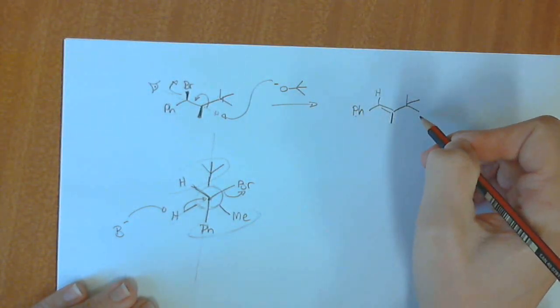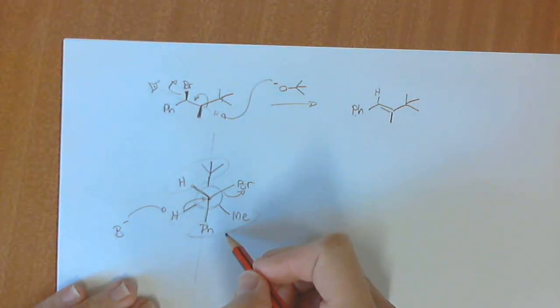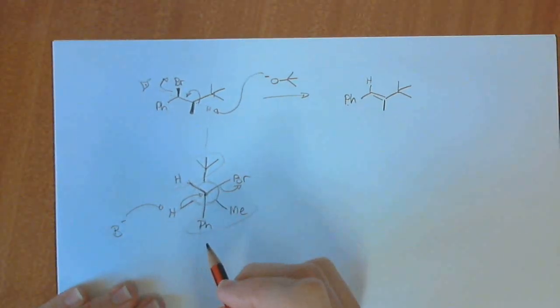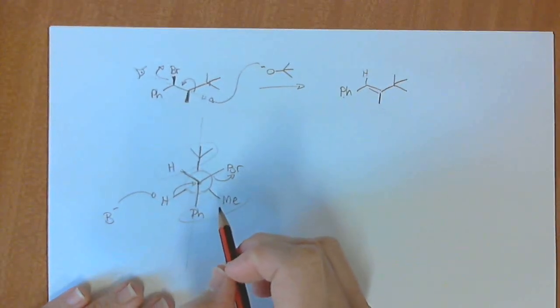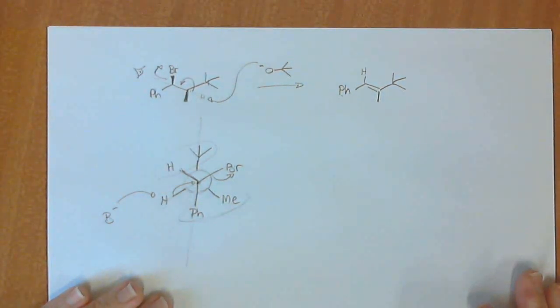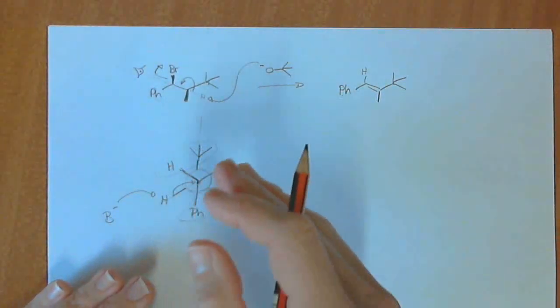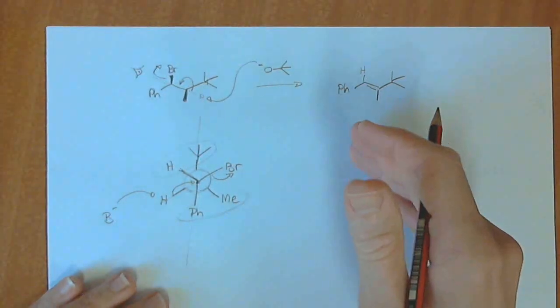So we've worked out the stereochemistry of the product correctly using the Newman projection. And you should always do this when you get an E2 elimination. Make sure that you're able to do it. So this is another example of a reaction which is stereospecific.